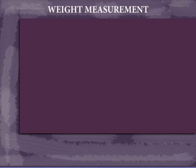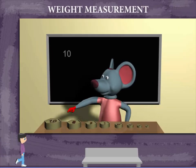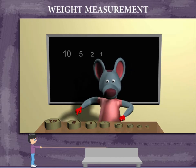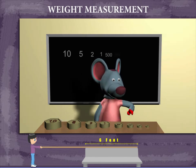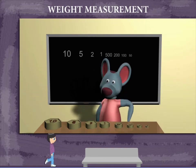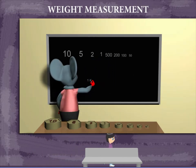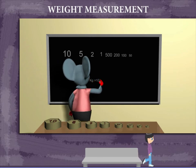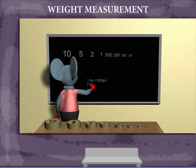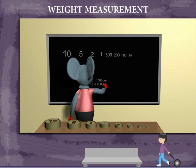Weight measurement. Robbie Mouse has weights of 10 kilogram, 5 kilogram, 2 kilogram, 1 kilogram, 500 gram, 200 gram, 100 gram, and 50 gram. Robbie now explains: 1 kilogram is equal to 1000 gram, and 2 kilogram has 2000 gram.